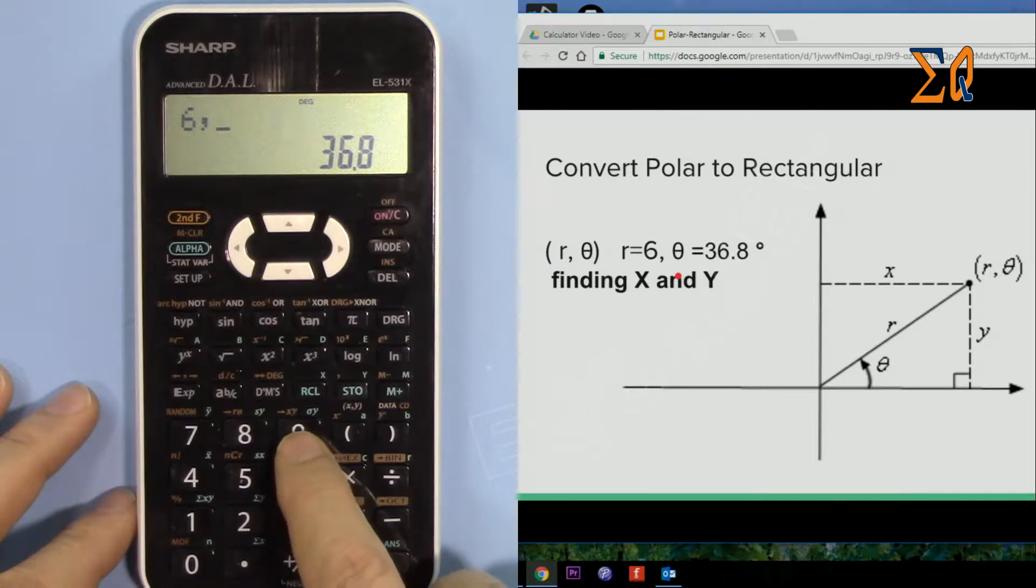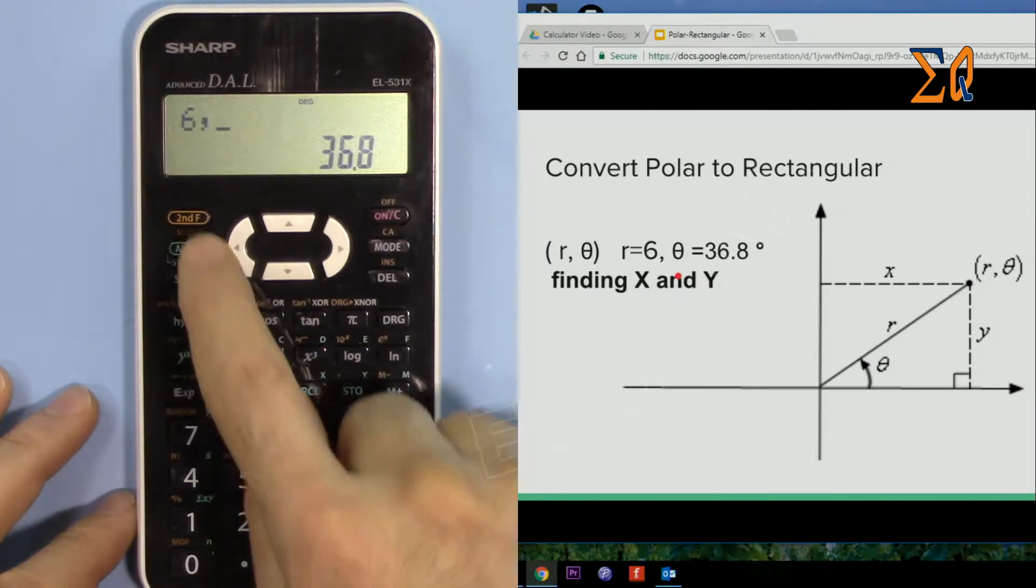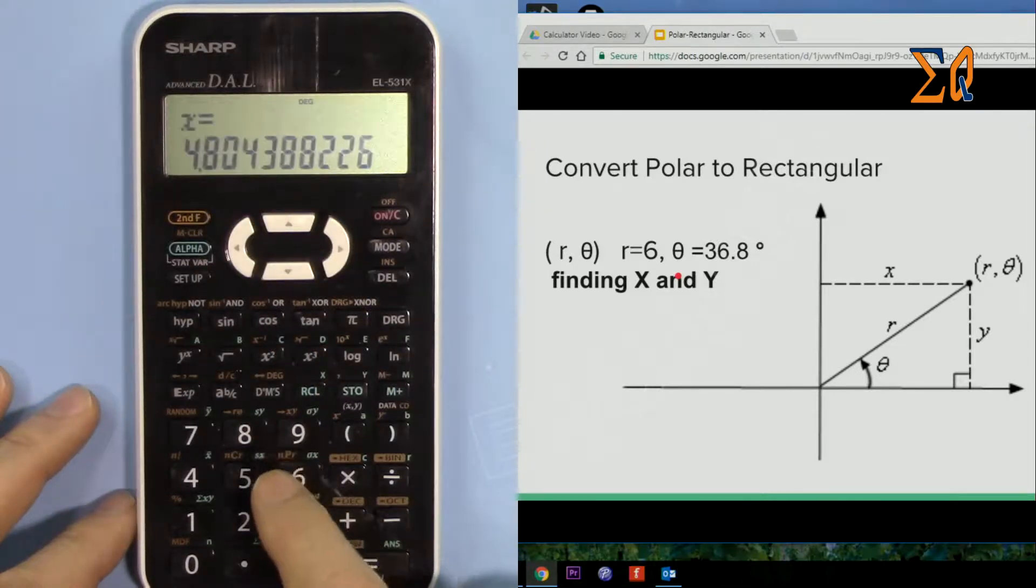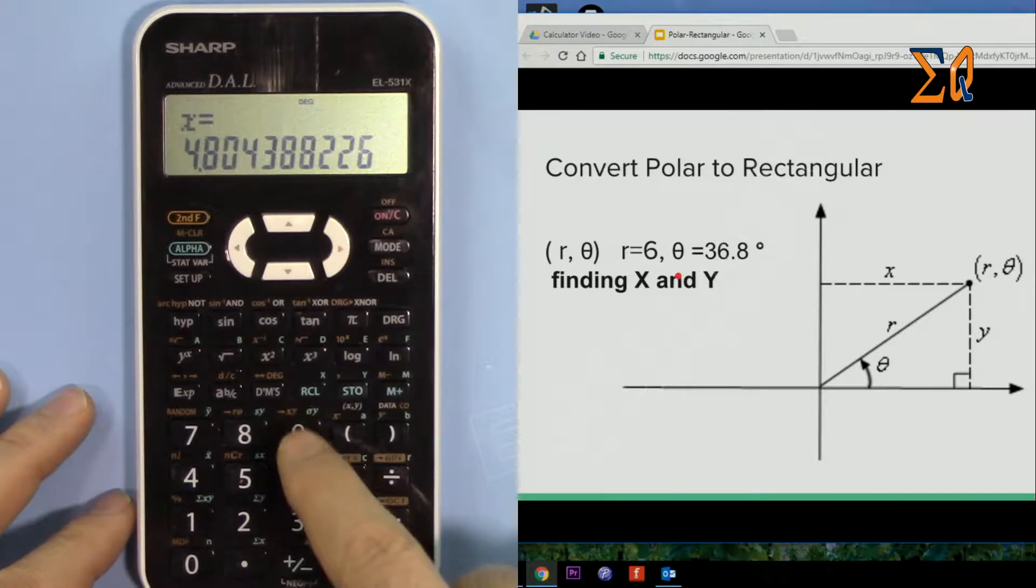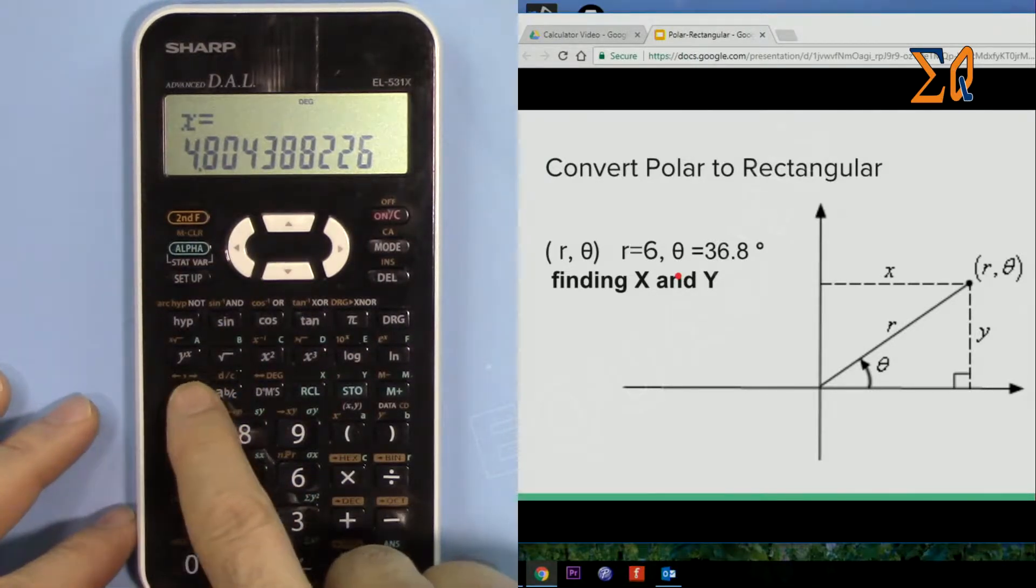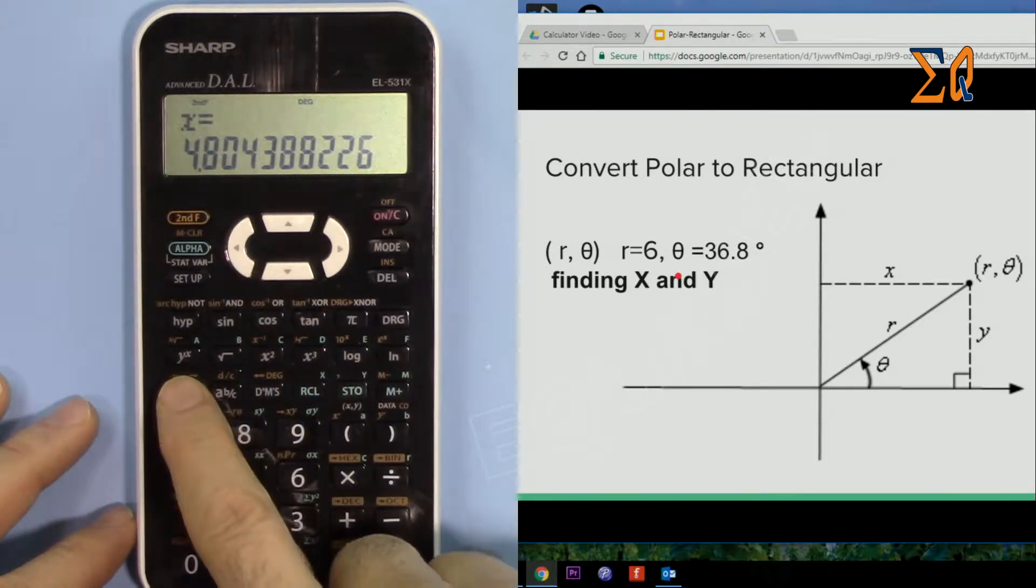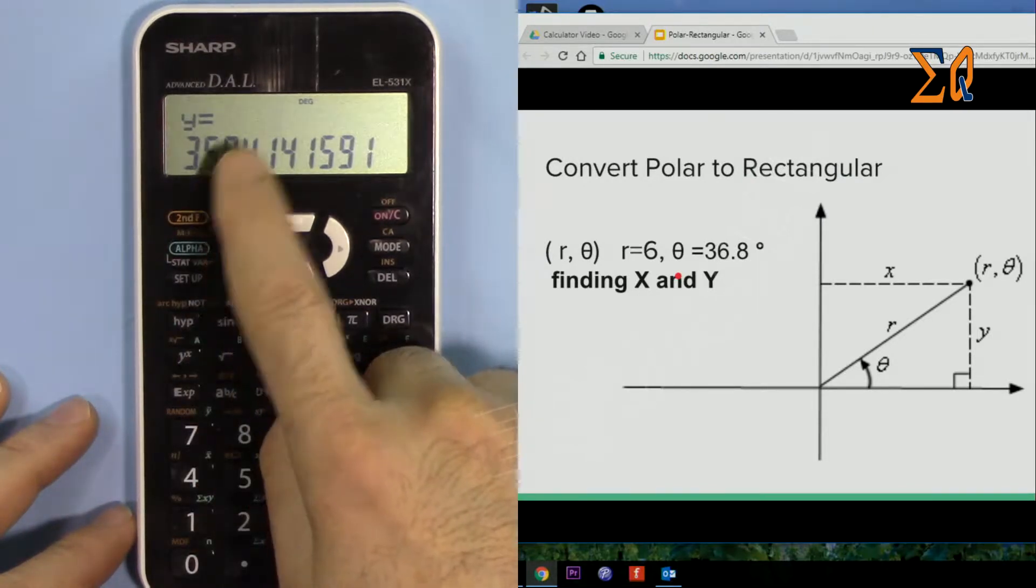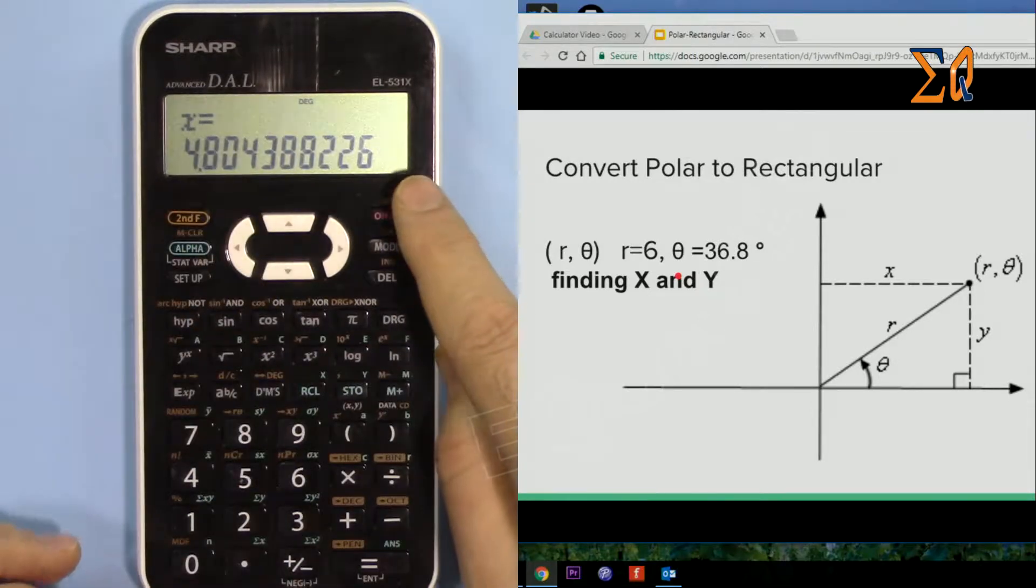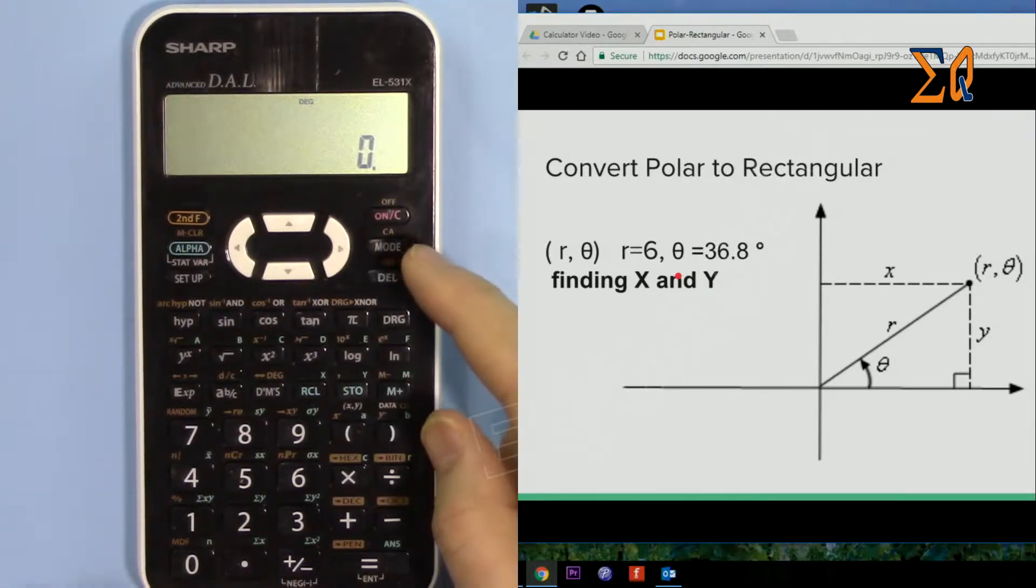To get Y, press second function and then this arrow with the left and right. So it gives you Y. And if you want X again, you're getting it at the same time. The values for X and Y...